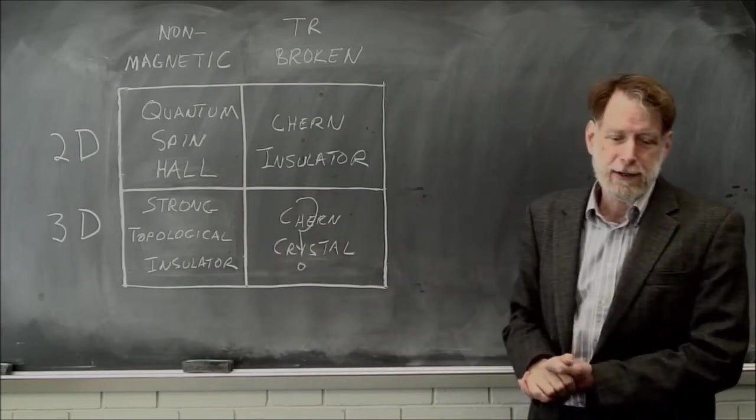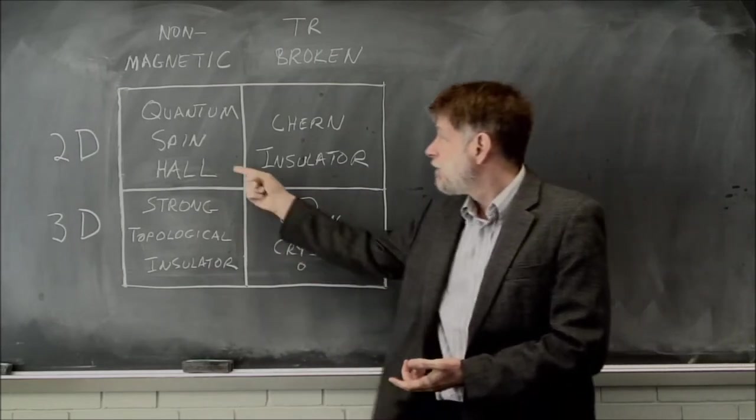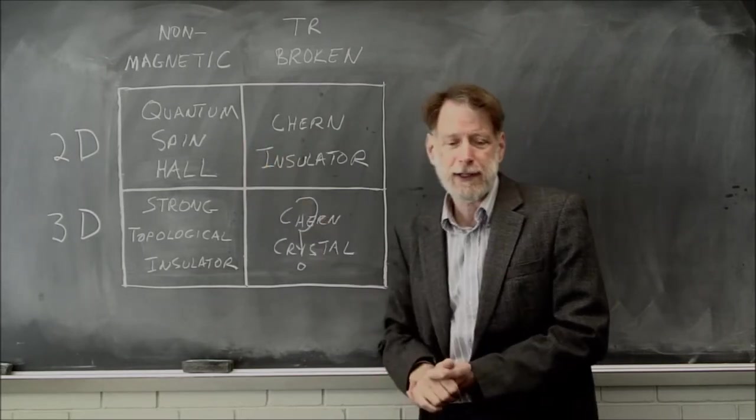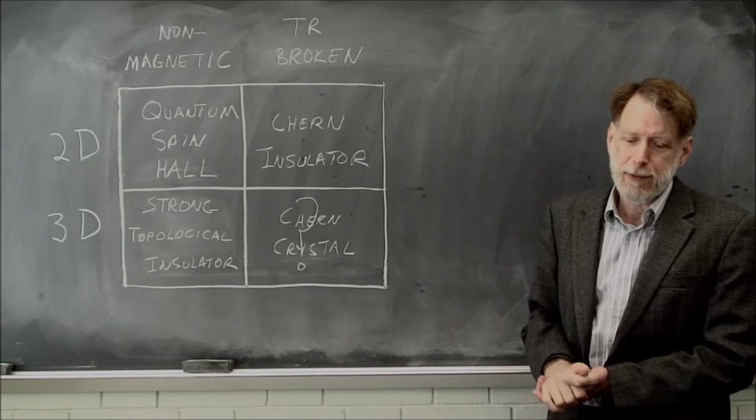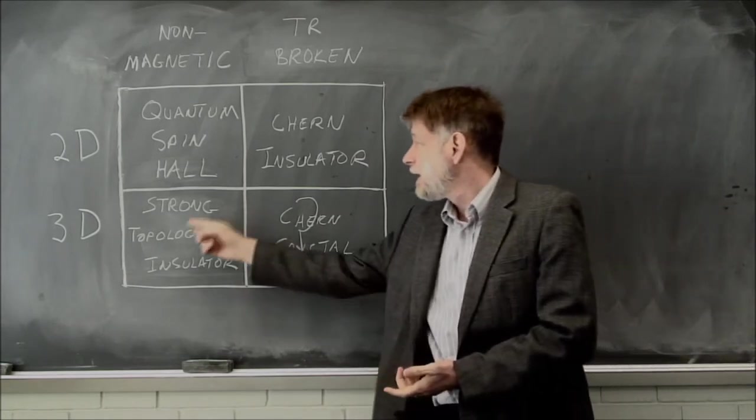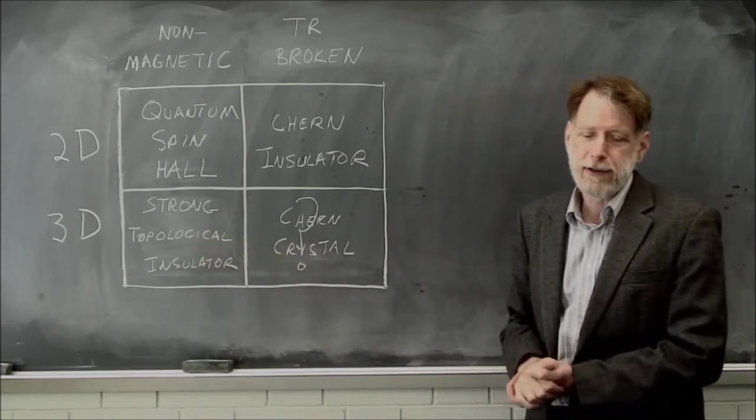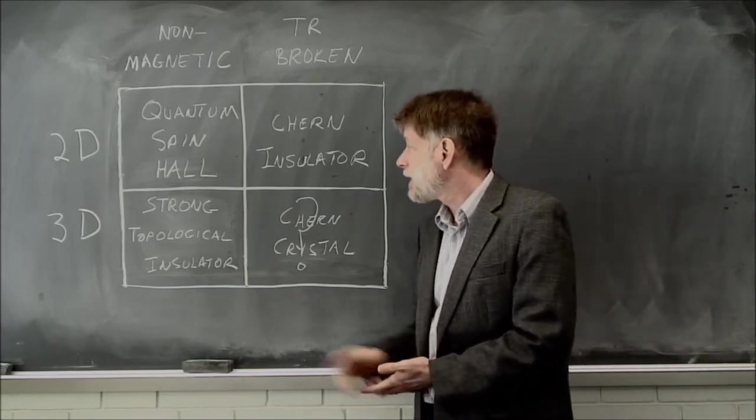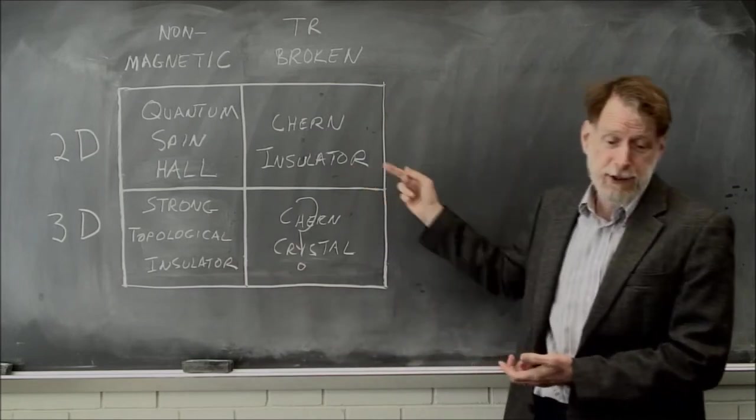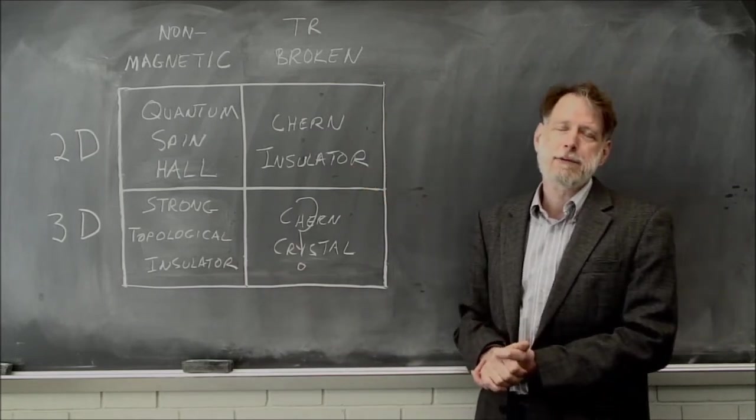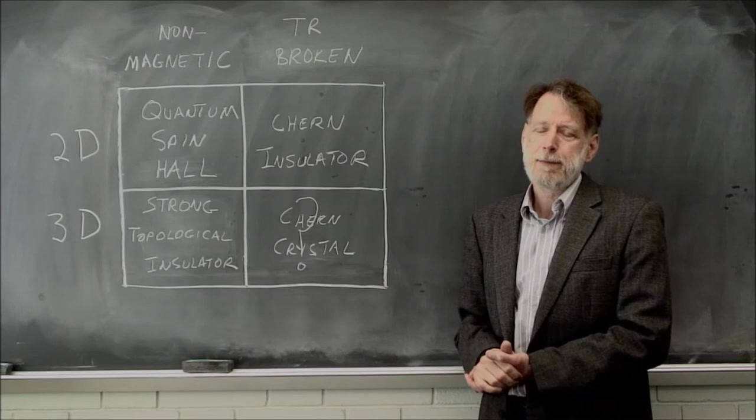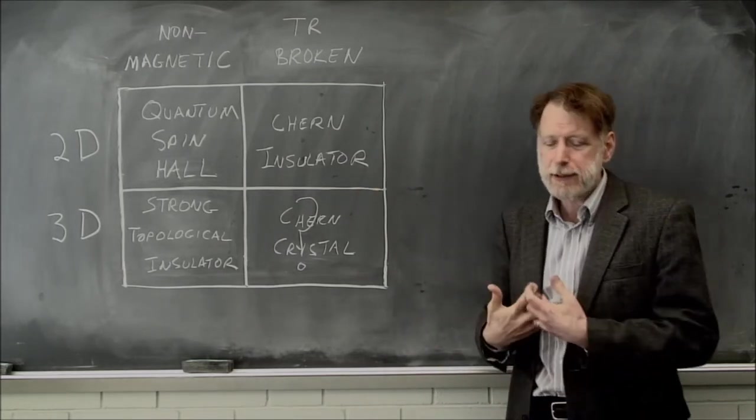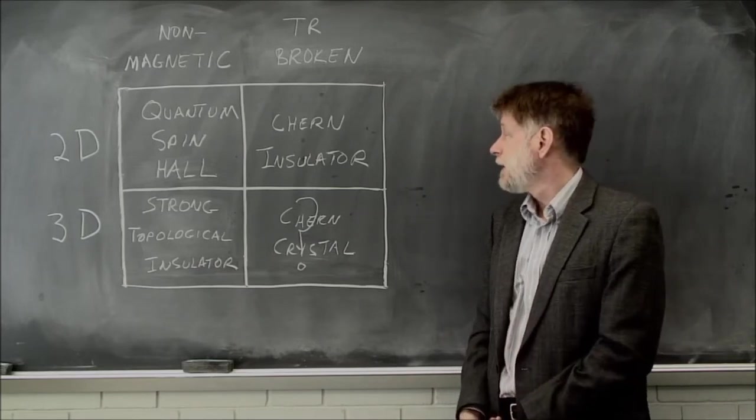Since the field of topological insulators began almost 10 years ago, relatively quickly we found experimental examples of the quantum spin Hall effect in cadmium-mercury-telluride inversion layers and strong topological insulators. The dominant materials are in the bismuth selenide and bismuth telluride class. The Chern insulator concept was introduced by Haldane almost 30 years ago, and it wasn't until 2013 that experimentally the first realization of this was found.